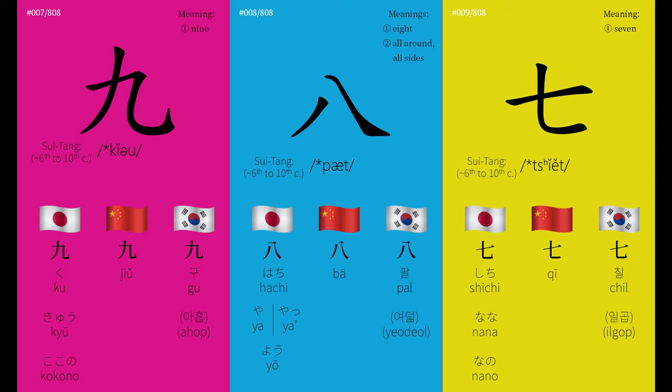For pronunciation, the Middle Chinese ancestor of most modern pronunciations was pet. This becomes ba in Chinese, hachi in Japanese, and pal in Korean. The Japanese also have their own reading of ya and yo, and the Koreans have yodel.